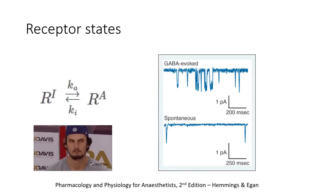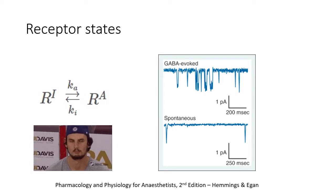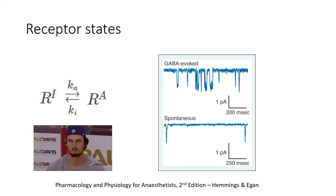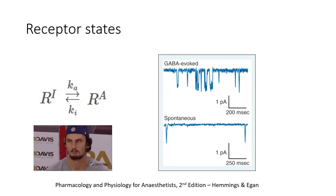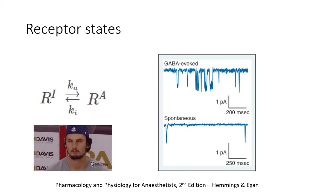You are likely familiar with the idea that receptors can exist in an active conformation and an inactive conformation. What you might not know is that there is a degree of flux between those two states, even in the absence of agonist binding. This is relevant to the way that we define drug receptor interactions.